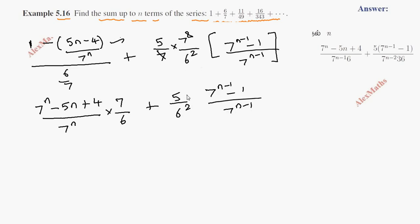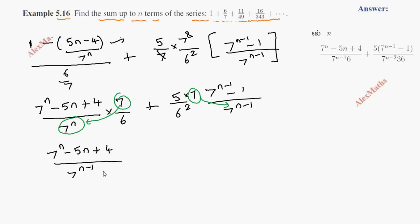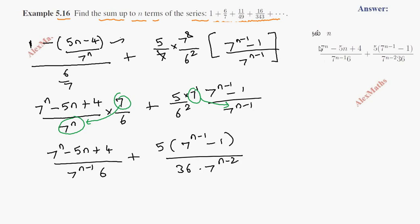Combining all the terms: 7^n into (7 by 6) plus 5 by 6 squared times [7^(n-1) minus (1 by 7)^(n-1)] into 7. This gives us the final answer: [7^n minus 5n plus 4] divided by [7^(n-1) into 6], plus 5 times [7^(n-1) minus 1] divided by [7^(n-2) into 36]. This is the sum up to n terms.